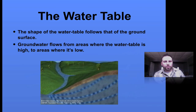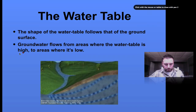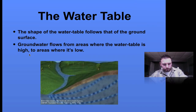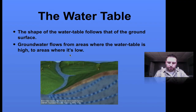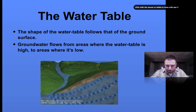The water table reflects the topography of the land, and water flows from areas where it's high to areas where it's low — just like wind flows from high to low. In this diagram, our water flows down in that direction.